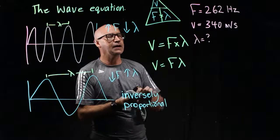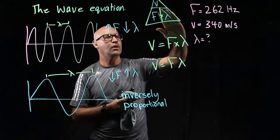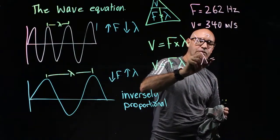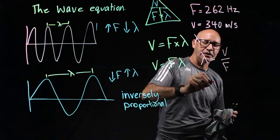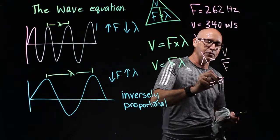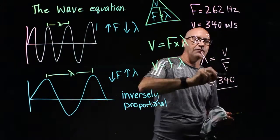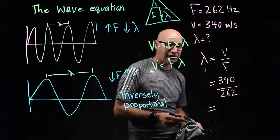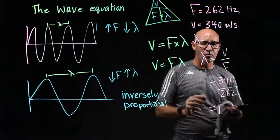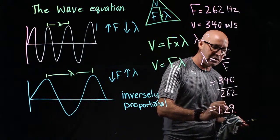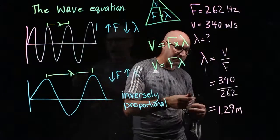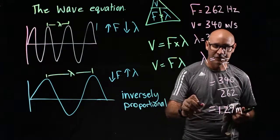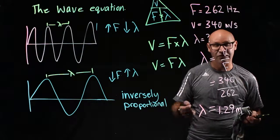So we can see that if we cover up wavelength, then wavelength equals speed divided by frequency. And our speed is 340 metres per second divided by our frequency of 262. And if we put that into our calculator, we work out that the wavelength is 1.29 metres. So that means the wavelength for this particular sound, this note, has a wavelength of 1.29 metres.